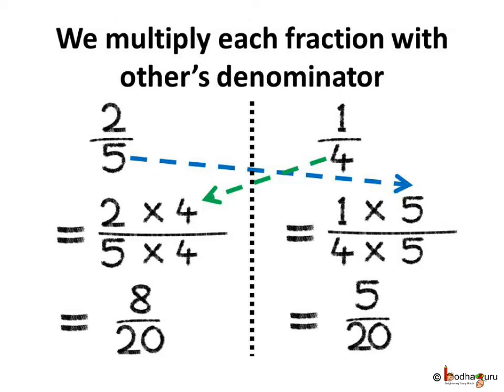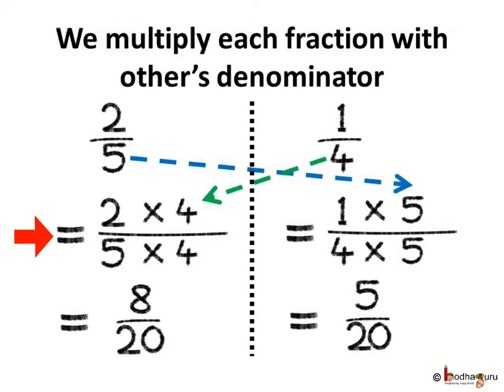Then both the denominators will be equal. In 2 by 5, multiply the numerator and the denominator by 4. And in 1 by 4, multiply the numerator and denominator by 5. To ensure that the value of the fraction remains unchanged, not just the denominator, even the numerator needs to be multiplied by the same number and we get an equivalent fraction.